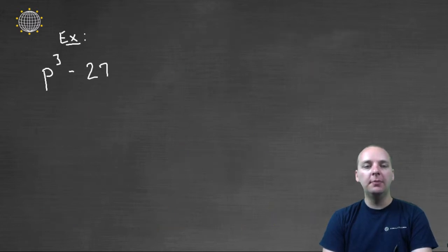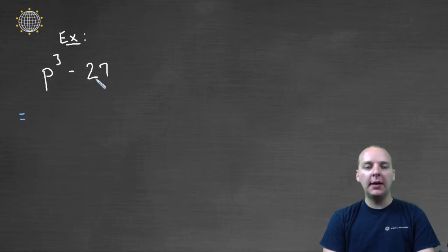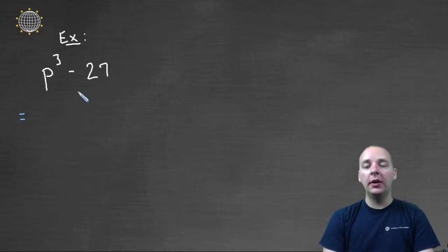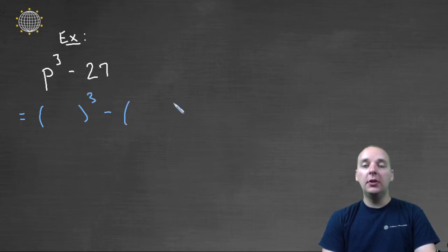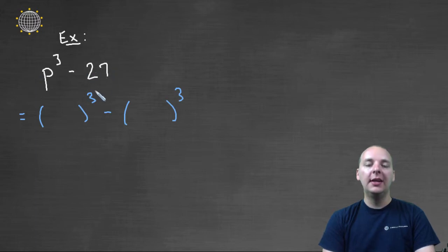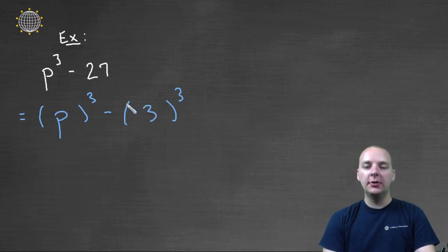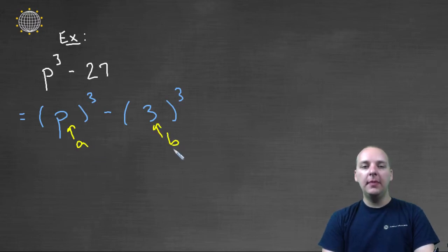Let's try two examples. We'll start with an easier one: P cubed minus twenty-seven. It has two terms, which makes me think it's a special factoring form — either a difference of squares or a difference of cubes. Because it's P to the third and twenty-seven is three to the third, I'm definitely thinking difference of cubes. So our A is P and our B is three.